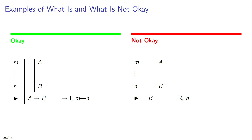Here are two examples — one of what is okay and one of what is not okay. As we have seen, if under the assumption that A you can infer B, then you are licensed to infer the conditional 'if A then B', and justify this inference by citing conditional introduction as applied to the entire sub-proof M to N. This is okay — this is a correct use of a sub-proof.